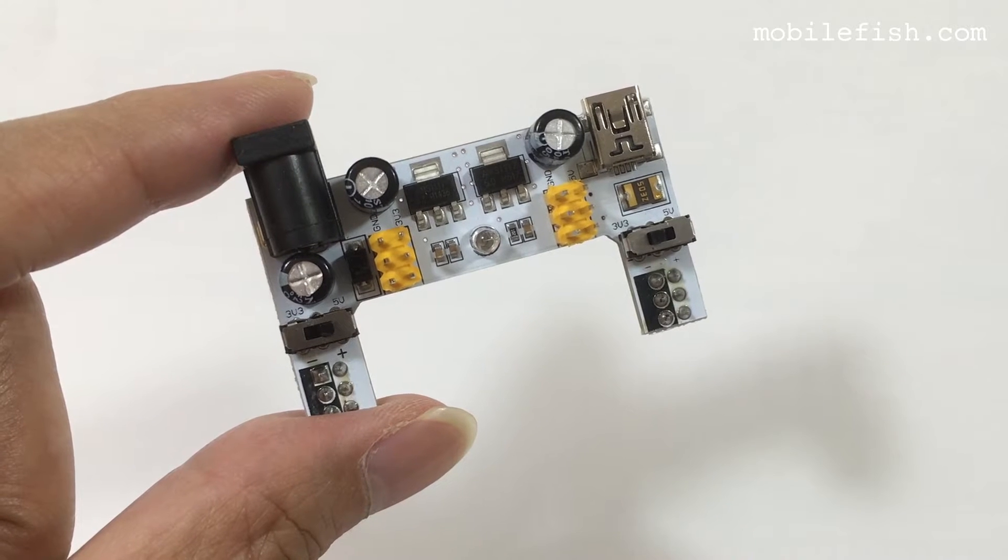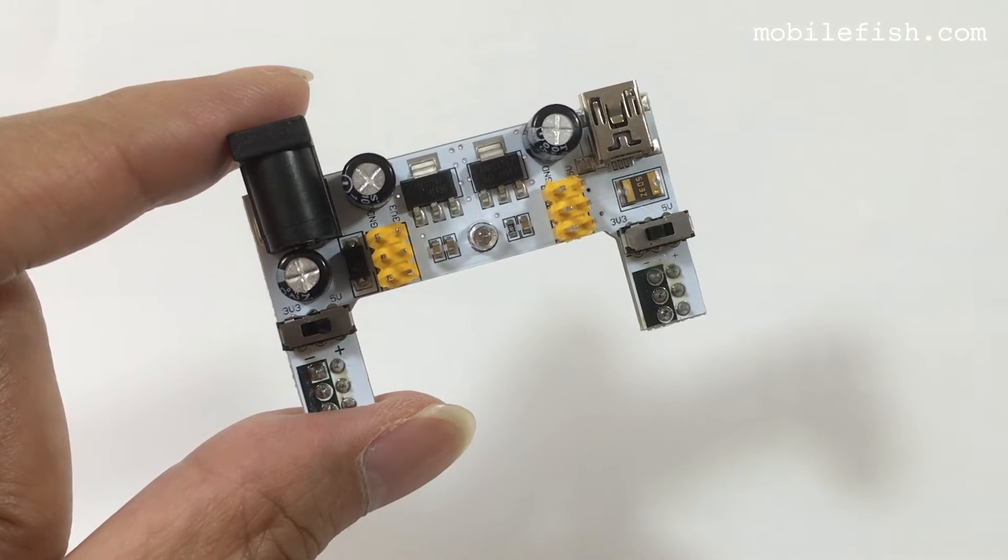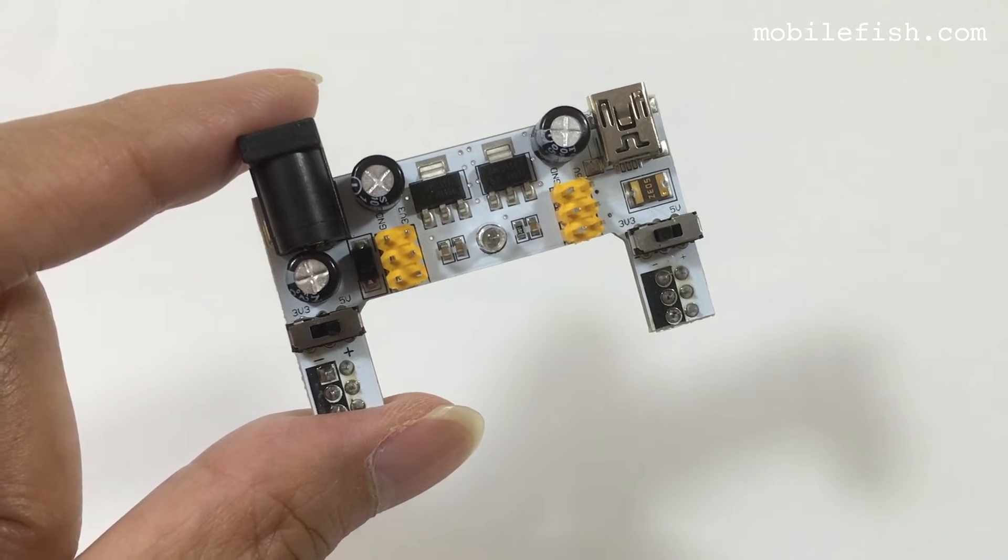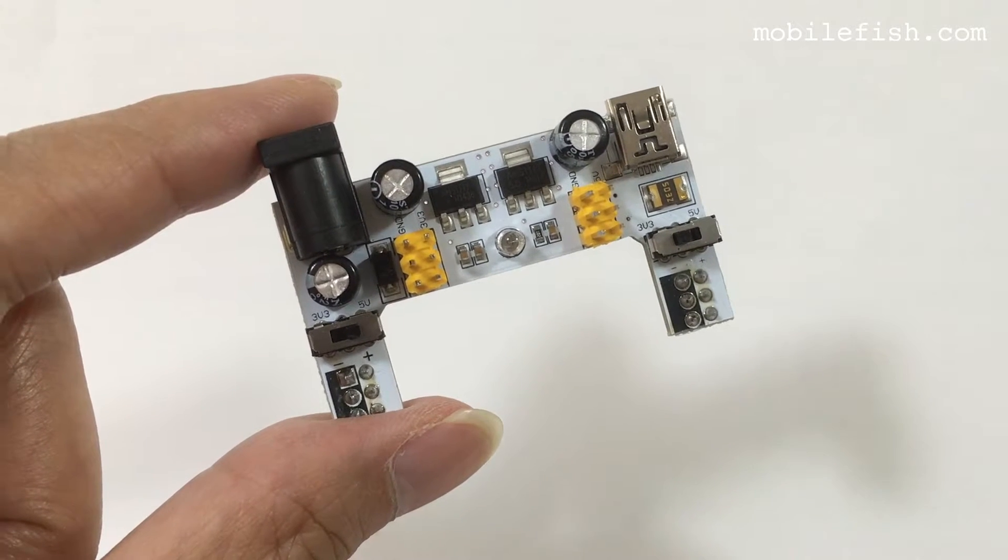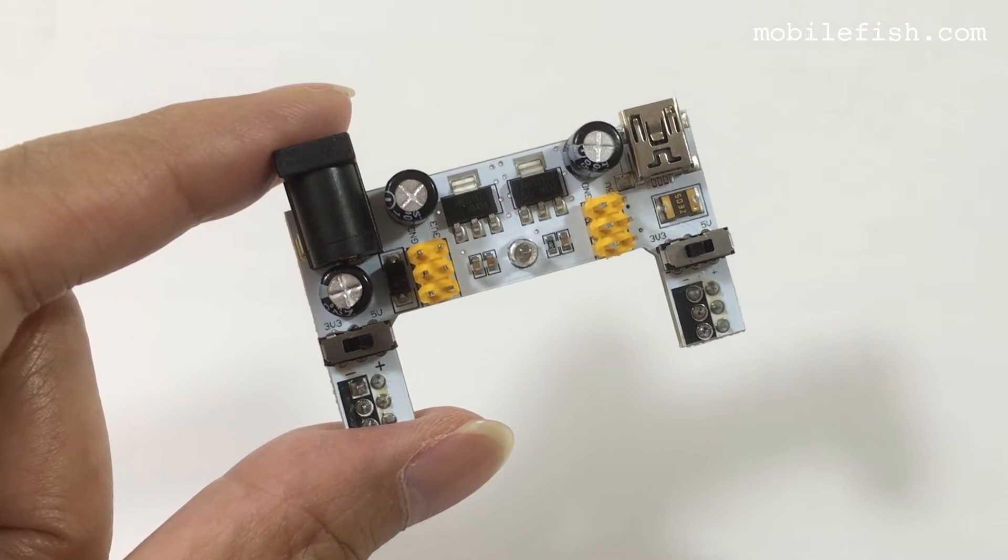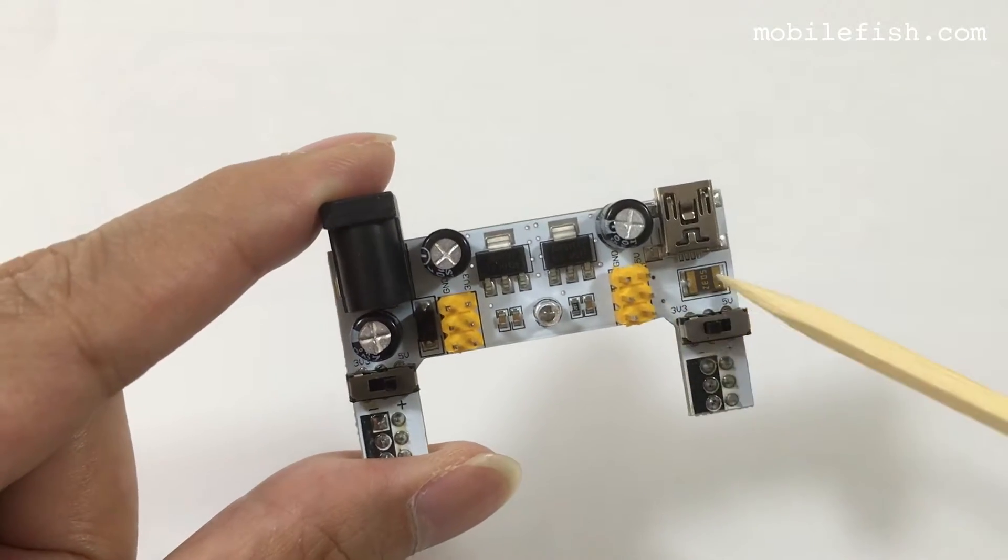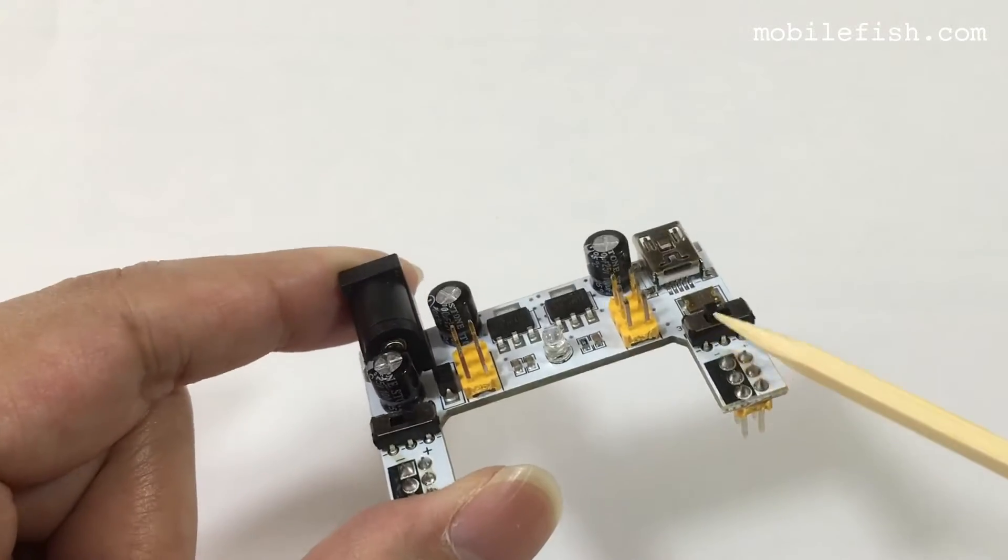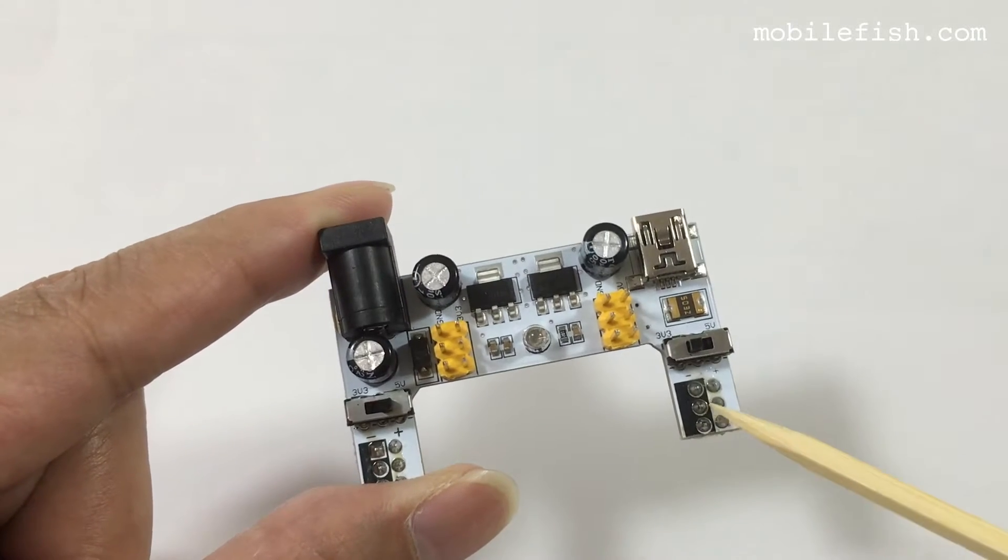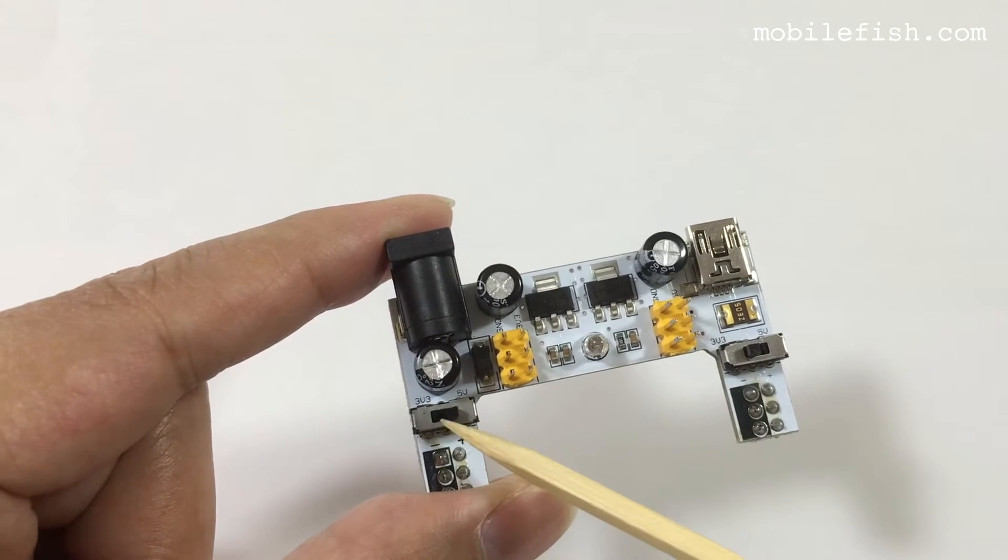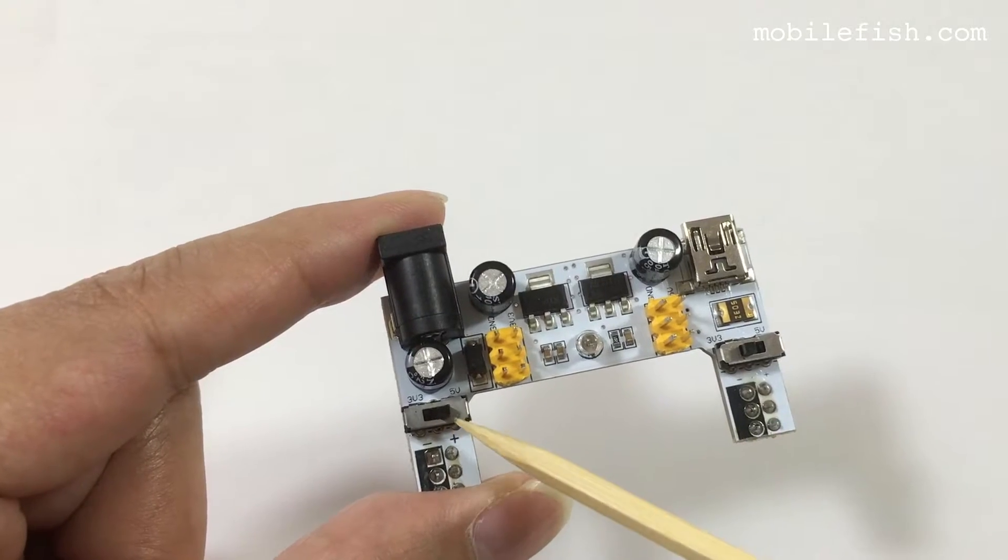This is the MB-102 breadboard power converter. It converts an input source between 7V and 12V to 3.3V or 5V. As you can see there's a switch which you can select 3.3V or 5V over here, and also over here, 3.3V and 5V.